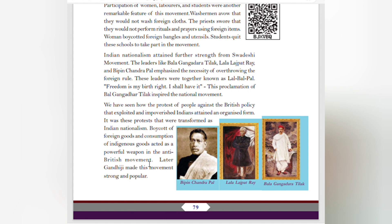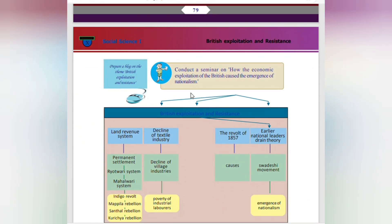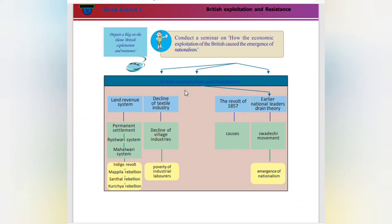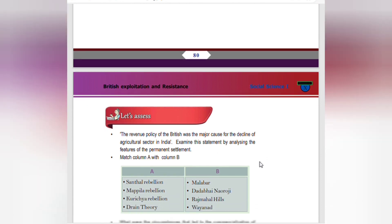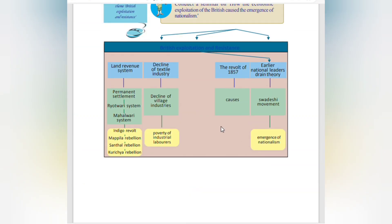We have seen how the protest of the people against the British policies that exploited and impoverished Indians attained an organized form. These protests were transformed into Indian nationalism. Boycott of foreign goods and consumption of indigenous goods acted as a powerful weapon in the anti-British movement. Later, Gandhi made this movement strong and popular. Key topics of this chapter include: land revenue systems (Permanent Settlement, Ryotwari, Mahalwari), Indigo Revolt, Mappila Rebellion, Santal Rebellion, Kurchiya Rebellion, decline of textile industry, decline of village industries, poverty of industrial laborers, the Revolt of 1857, Drain Theory, and the Swadeshi Movement leading to the emergence of nationalism.